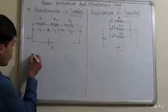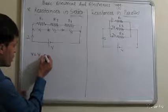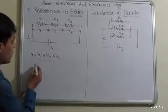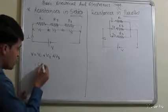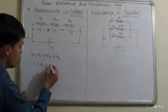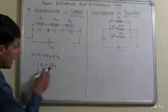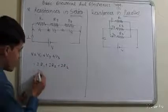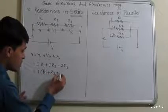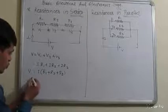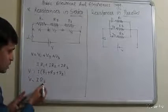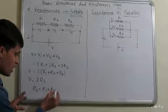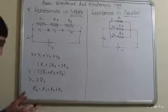For series combination: total voltage V equals V1 plus V2 plus V3. According to Ohm's law V = IR, so V1 = I·R1, V2 = I·R2, and V3 = I·R3, where I is the same current through all resistances. Taking I as common: V = I times (R1 + R2 + R3). So V = I·RS, where RS is the series combination of resistances. Therefore RS = R1 + R2 + R3. When resistances are in series, we simply add them.